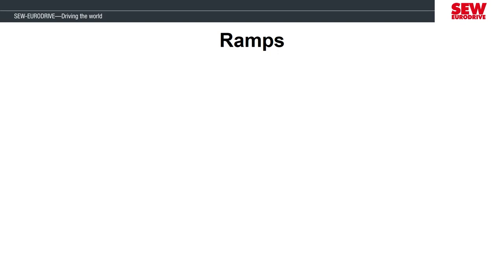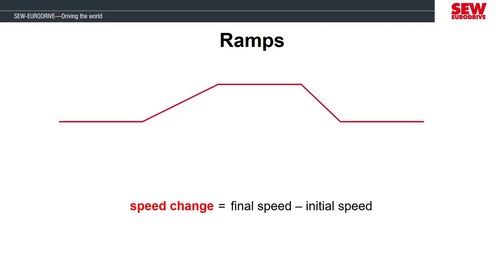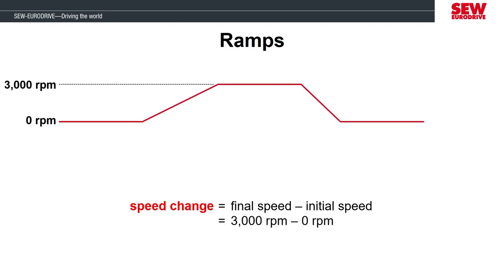The first definition will be a speed change, which is the difference between the final speed and the initial speed of the motor. Let's look at this using a speed and ramp graph to visualize it. For this example, the final speed will be 3000 RPM and the initial speed will be 0 RPM. The difference or the speed change between these two speeds is 3000 RPM.